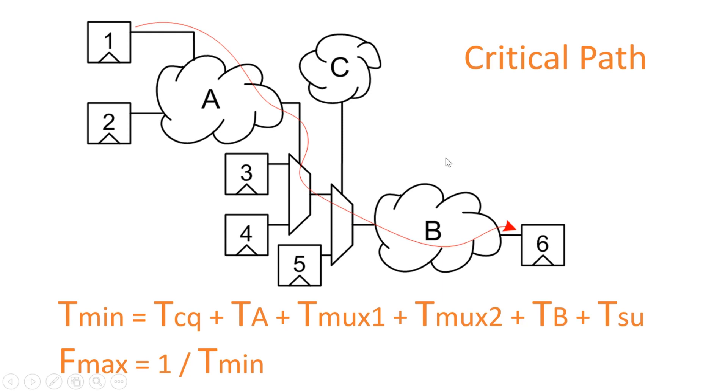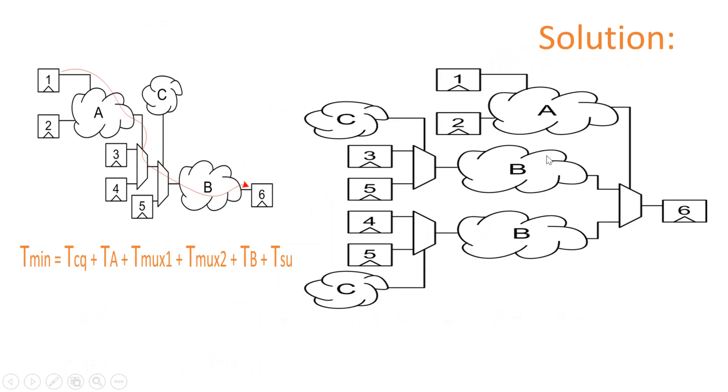Okay let us go ahead friend. This is a solution given by the same website from where I have taken this question. And let us try to see the same path which was a critical path, so path from flip-flop 1 to flip-flop 6. So in the solution, this path is from combinational logic A and then there is a MUX and reaching to flip-flop 6 and this path is highly reduced.